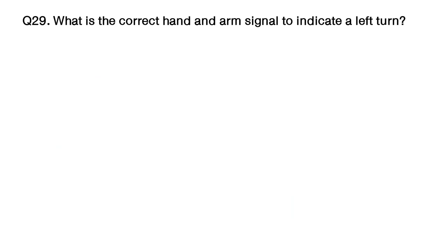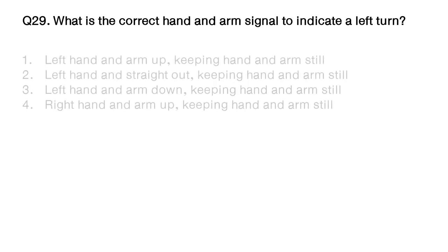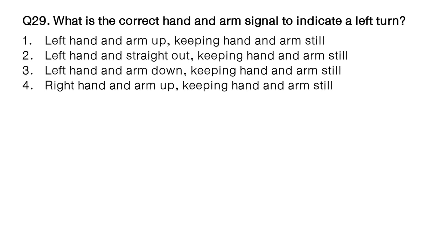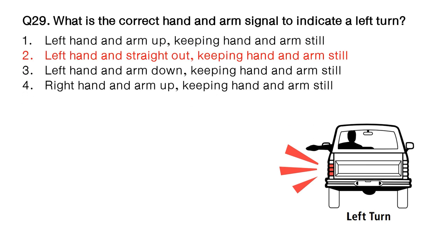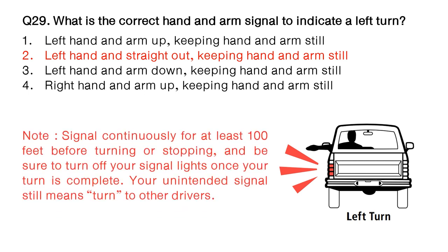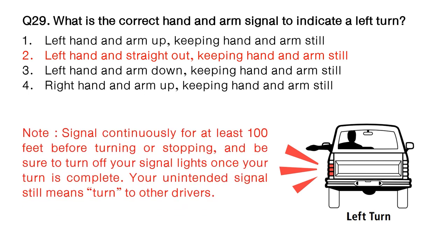Question: what is the correct hand and arm signal to indicate a left turn? Option number 1: left hand and arm up, keeping hand and arm still. Option number 2: left hand straight out, keeping hand and arm still. Option number 3: left hand and arm down, keeping hand and arm still. Option number 4: right hand and arm up, keeping hand and arm still. The answer is option number 2: left hand straight out, keeping hand and arm still. Note: signal continuously for at least 100 feet before turning or stopping, and be sure to turn off your signal lights once your turn is complete. Your unintended signal still means turn to other drivers.